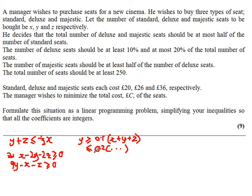The next inequality gives us 8y, because we get y and then subtract 2y when we sort it out. So 8y minus 2x minus 2z is less than or equal to 0. That's not written the best way — I should cancel the 2s and then move everything to the other side, dividing by 2.